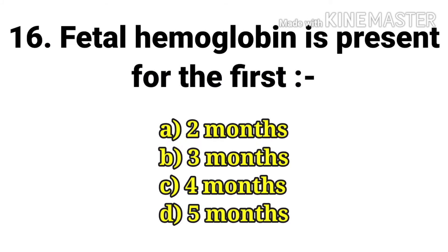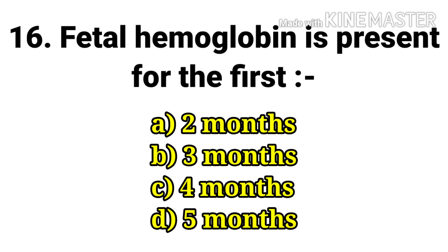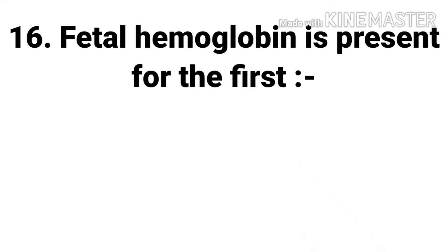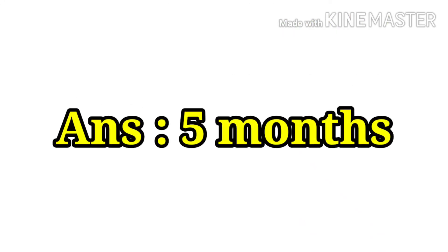The next question: fetal hemoglobin is present for the first — options are 2 months, 3 months, 4 months, and 5 months. The answer is 5 months.